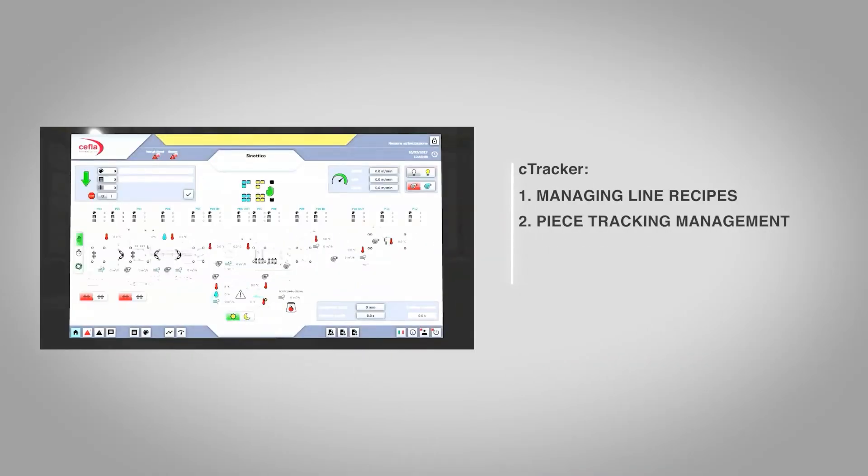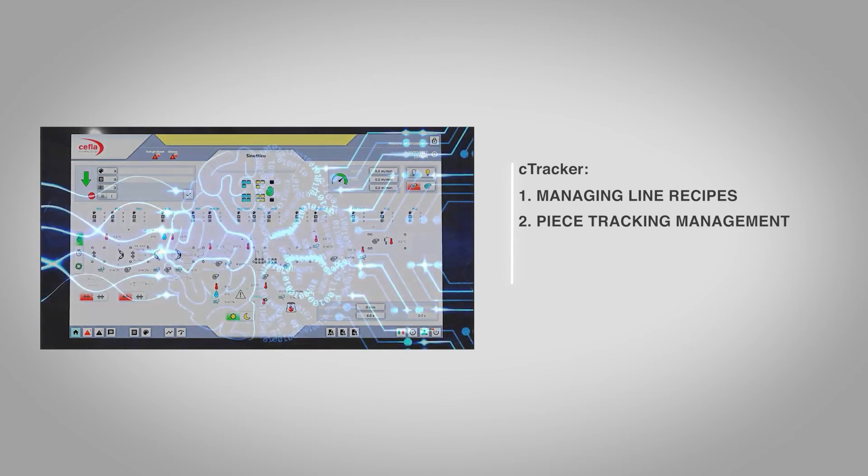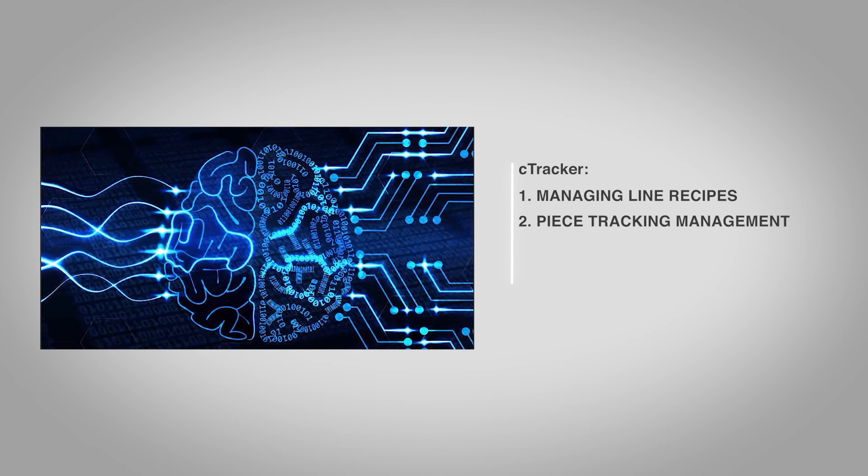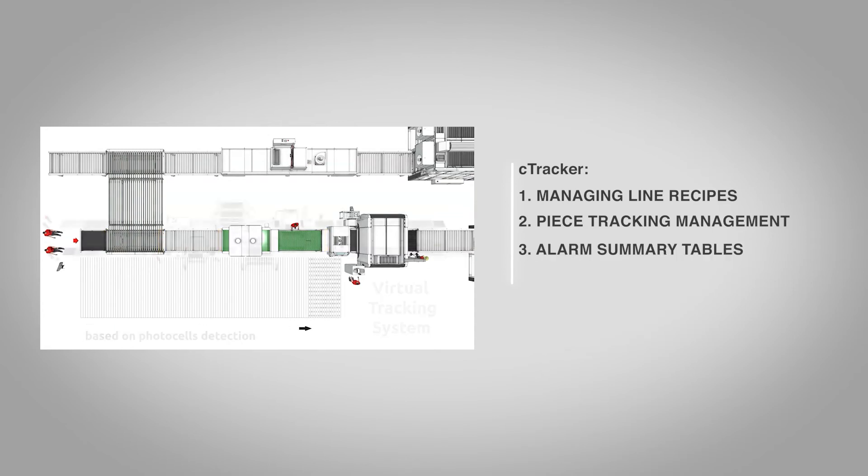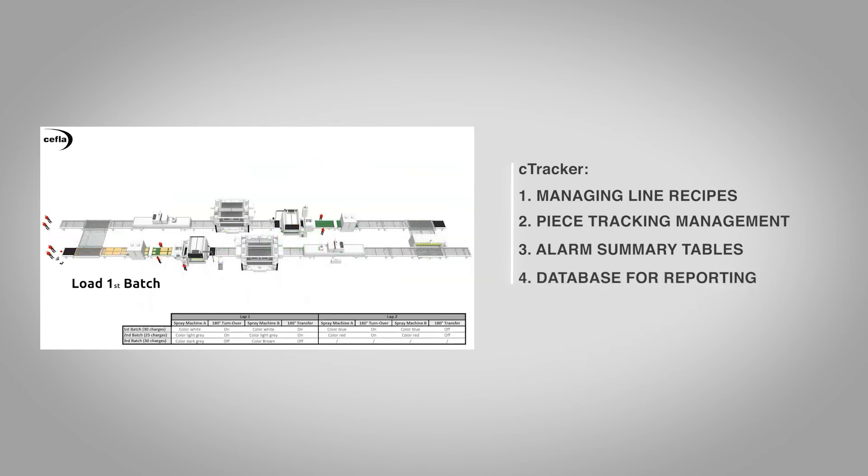Constant tracking, even down to a single piece, enables the operator to switch between production requirements on the fly without needing to empty the line, reprogram the machines and restart the line each time. This saves time and boosts productivity.